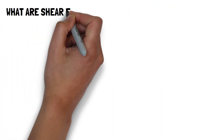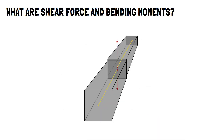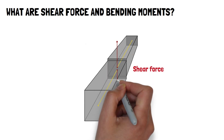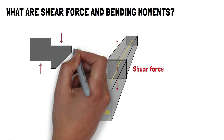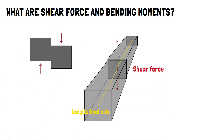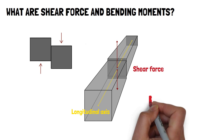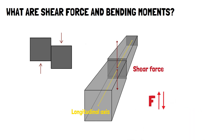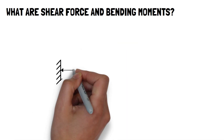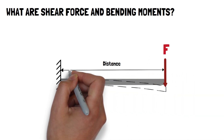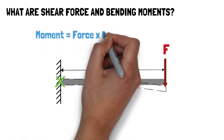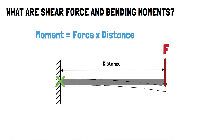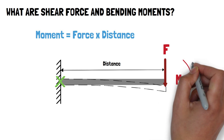Let's start by defining what shear force and bending moments are. Shear force is the force that acts perpendicular to the longitudinal axis of the beam and tends to cause the beam to slide or shear apart at a particular section. It is denoted as F and can act upwards and downwards. A bending moment happens when there is a distance between the applied force and the point at which the moment is acting. It is calculated by multiplying the force by the distance and causes the beam to bend about the point. It is denoted as M and can act clockwise or anti-clockwise.